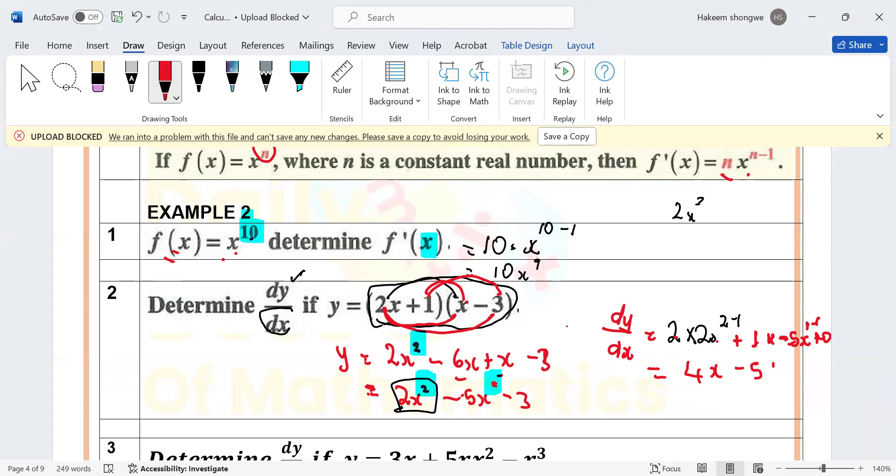If this wasn't an examination, you're going to get a mark for expanding - they want to check that you still remember how to expand. They're going to give you one mark for differentiating 2x squared, they're going to give you a mark for differentiating this one, and then we are done with number two.